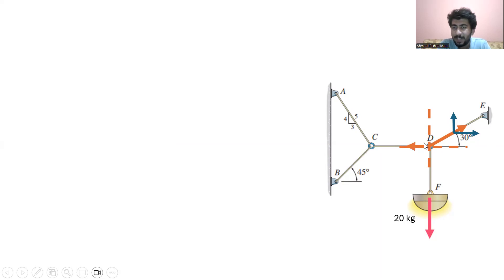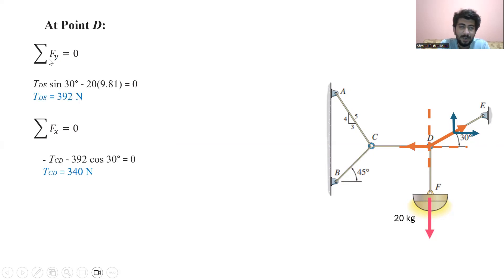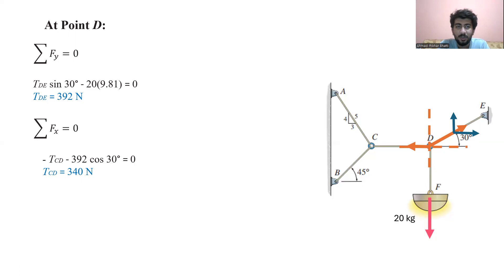The cord CD force is acting in the negative x direction. At point D, if I take the force in the y direction, I get the tension in cord DE. And if I take the force in the x direction, I get the negative tension in cord CD. The tension value comes out to be 392 Newtons, and using the cos component at 30 degrees, I get the tension in cord CD, which is 340 Newtons.